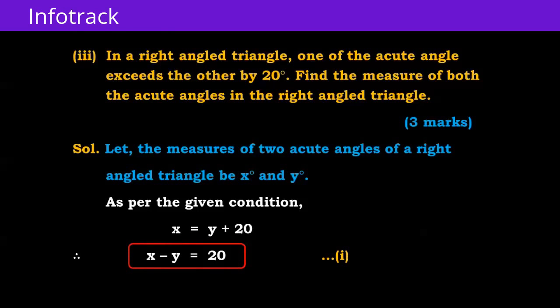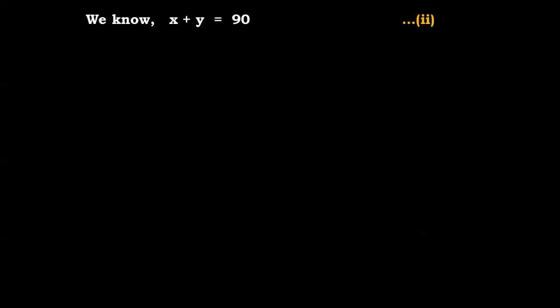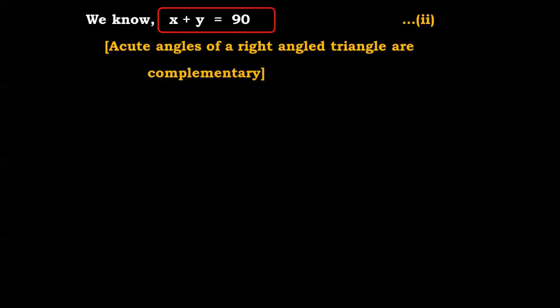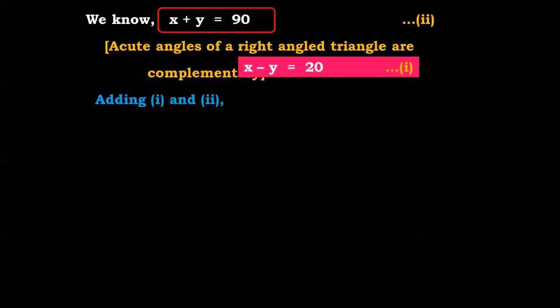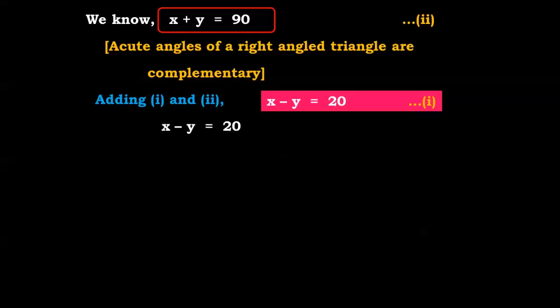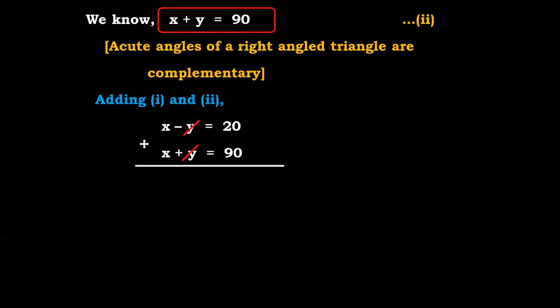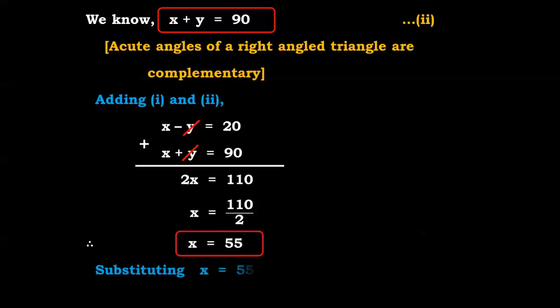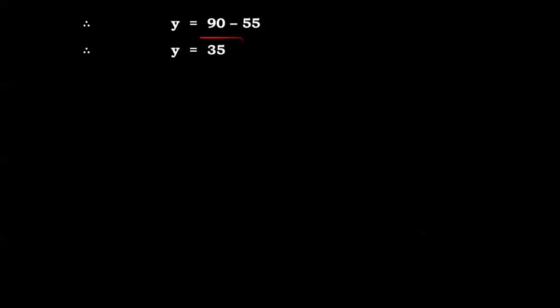We know that the sum of the two acute angles in a right triangle is 90 degrees, so x + y = 90, equation 2. The reason: acute angles of a right triangle are complementary. Adding equations 1 and 2: x - y + x + y gives 2x = 110, so x = 55. Substituting x = 55 in equation 2: 55 + y = 90, therefore y = 35.